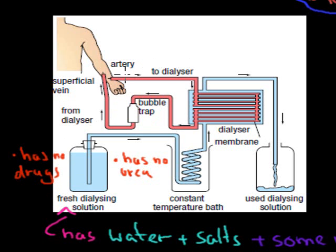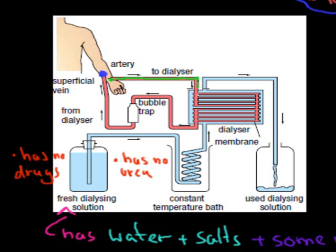If we lose the function of our kidneys, we have no way of getting rid of urea and no way of balancing our water and salt content. So instead we use this dialysis machine. What happens first is a needle is inserted into our artery. Then our blood travels through these coils and eventually returns to the body after it's been cleaned. It does a pretty good job of cleaning the blood itself.